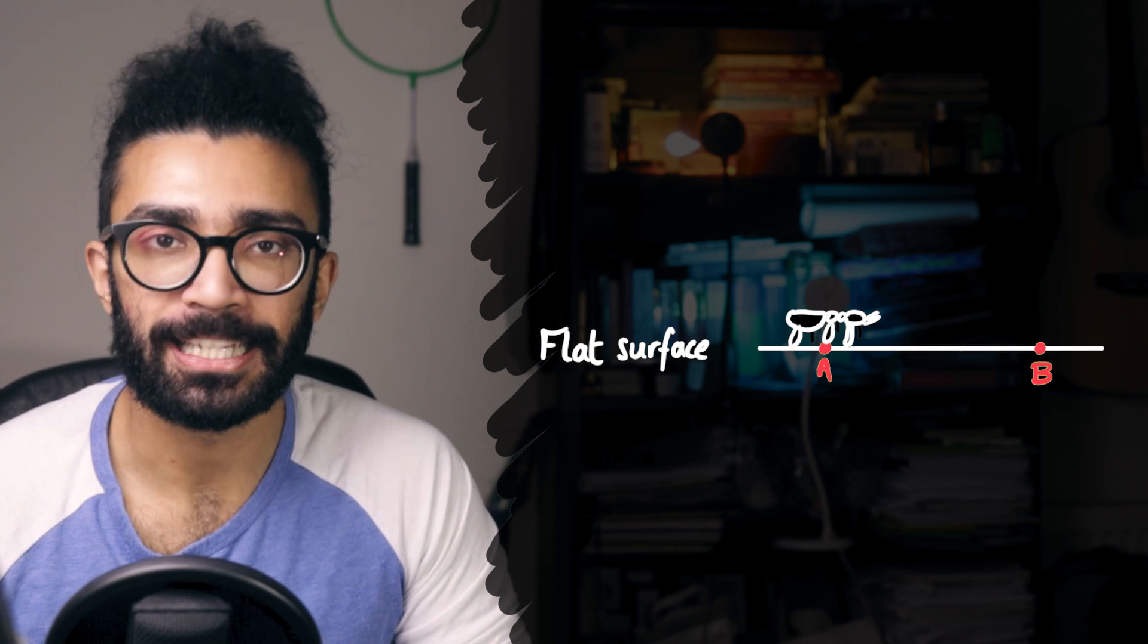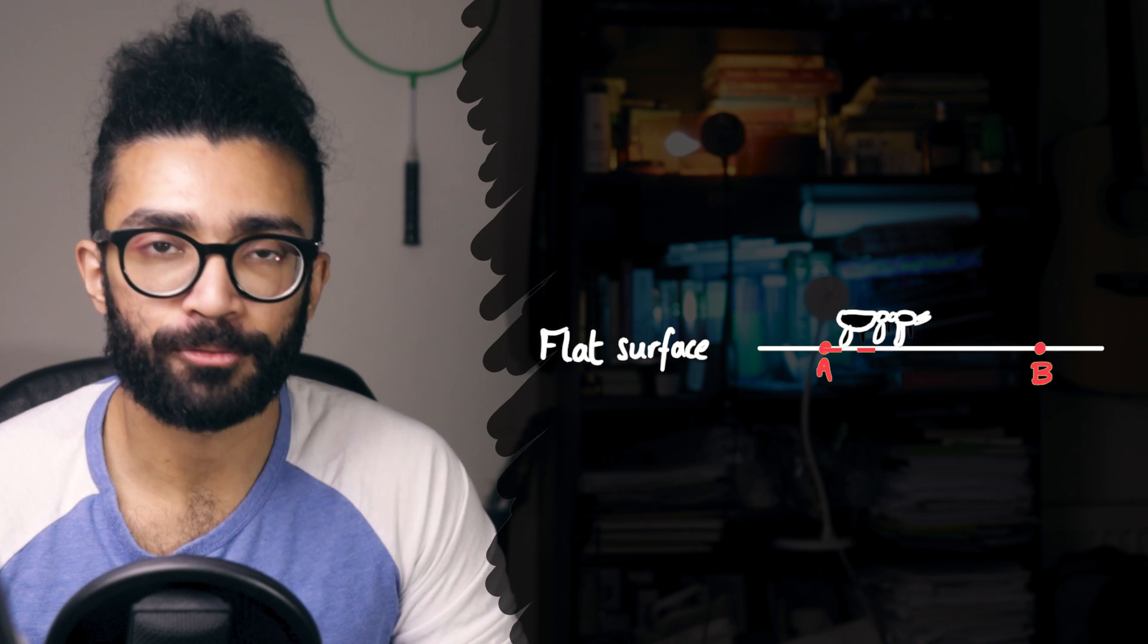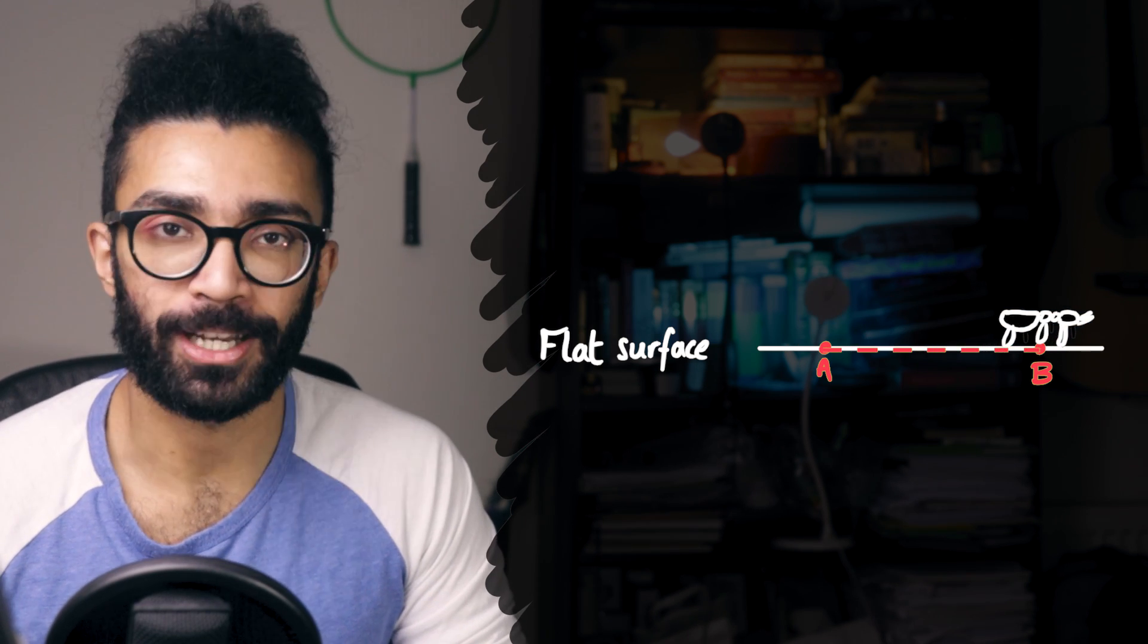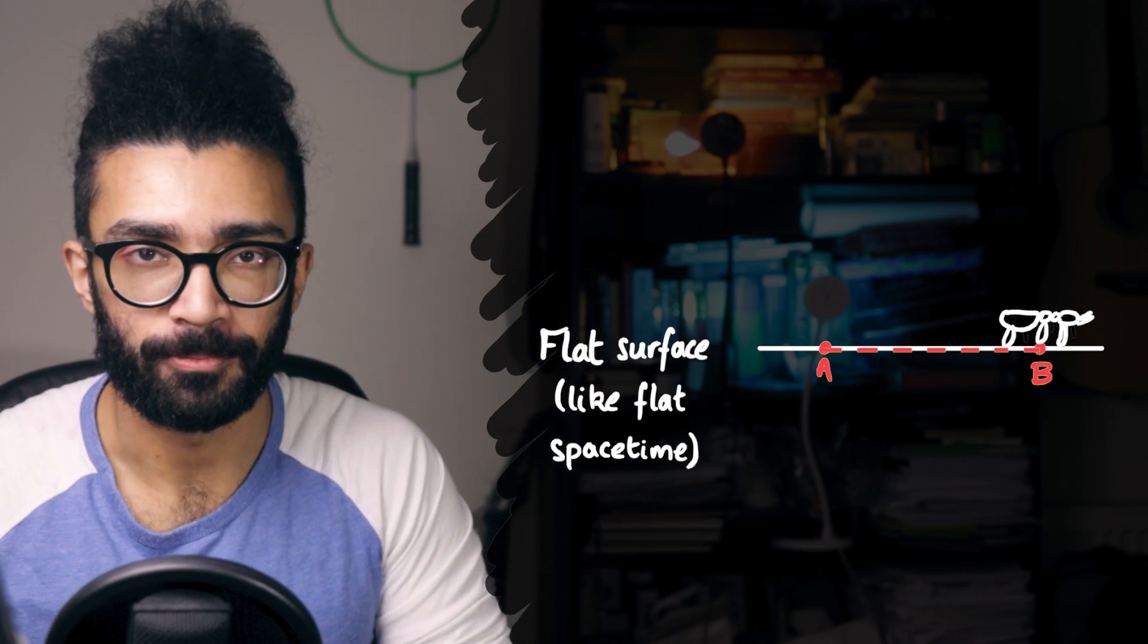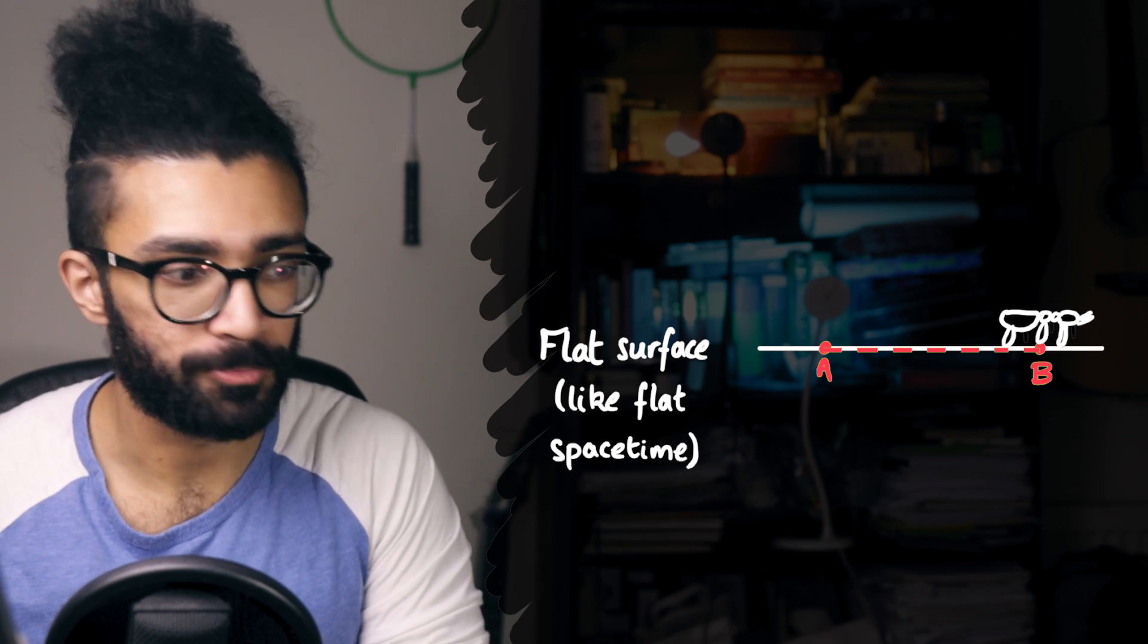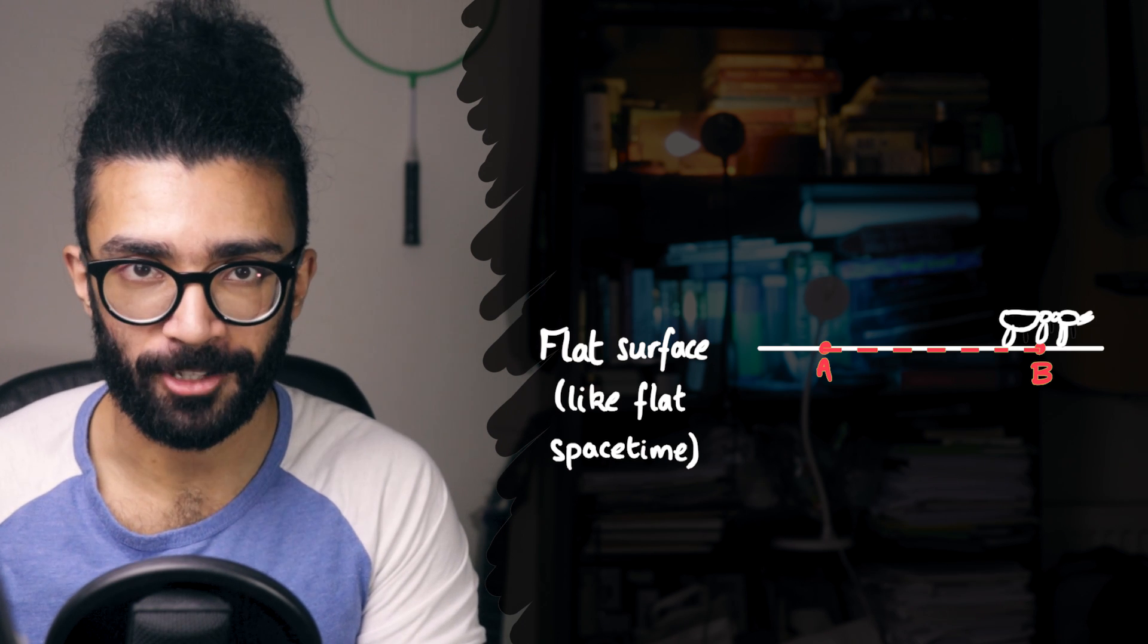The ant is at A, and it wants to get to B. The shortest route to get from A to B is simply a straight line. This is a rather simplified description of flat spacetime, where there's no energy, no matter, no nothing, to warp the spacetime fabric around itself.